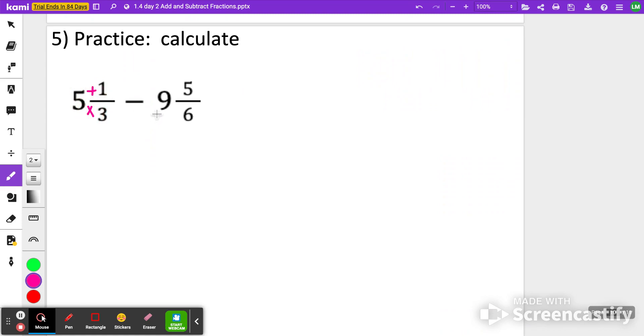One final example, and then we'll complete our section of notes for today. Again, we're going to change to impropers first. So again, let's pause, try it on your own. When you're ready to check it, click play.